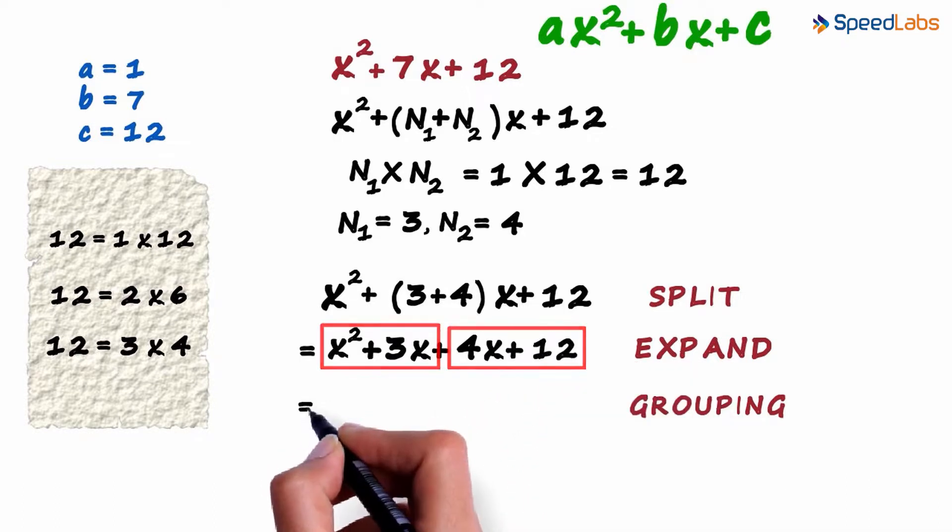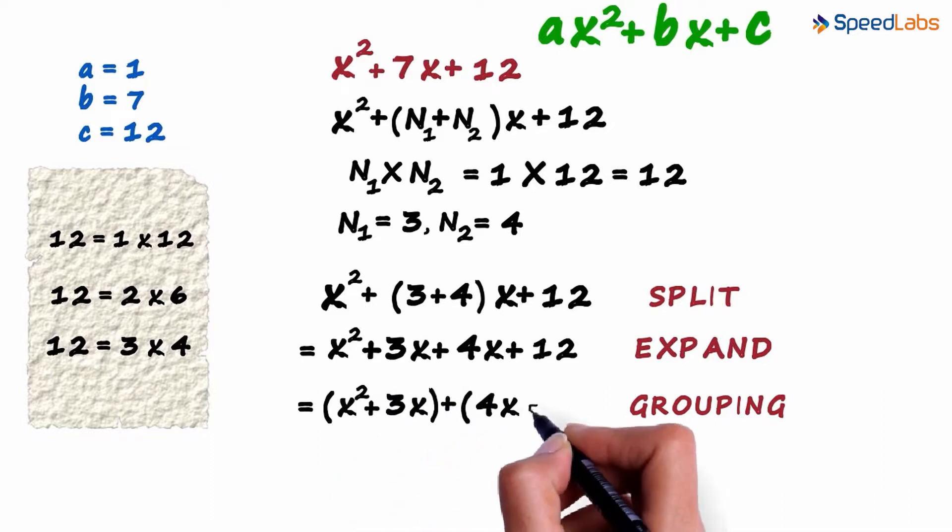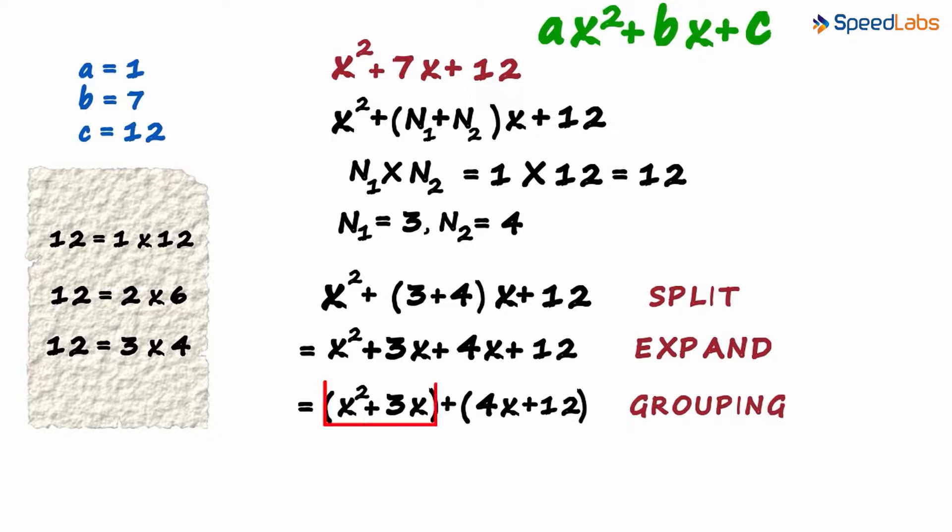We make two groups. x squared plus 3x as one group and 4x plus 12 as the other. In the first group, the variable x is common. So we write the first group as x multiplied by x plus 3.